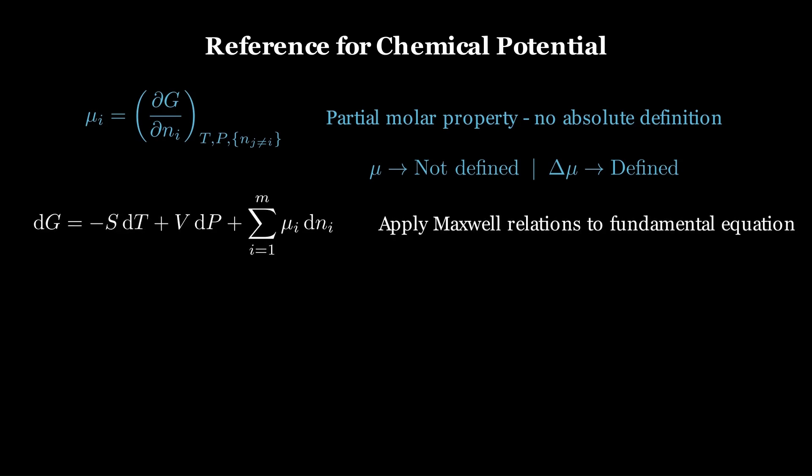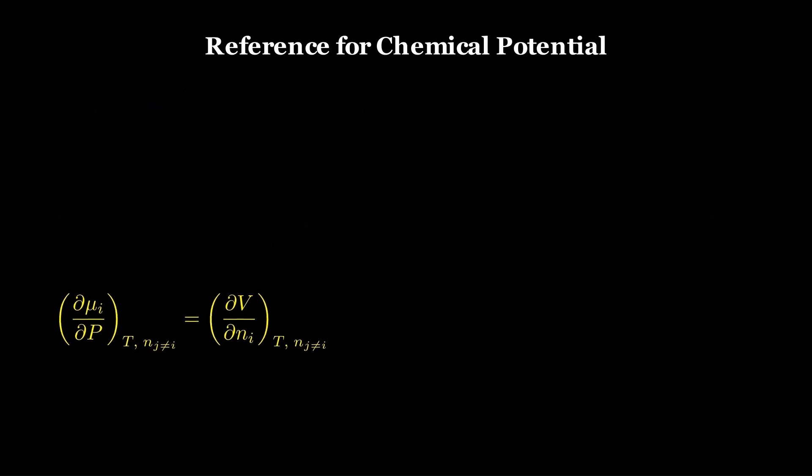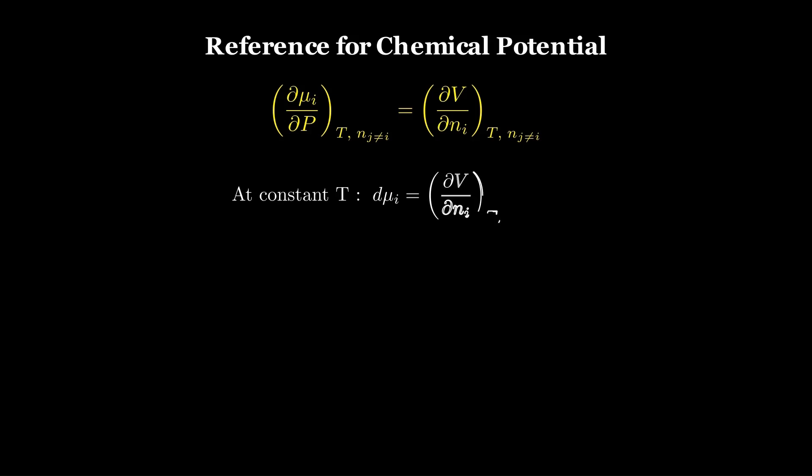To make those dependencies explicit, we begin with the fundamental differential equation for the Gibbs free energy, whose natural variables are T and P. Applying Maxwell relations separates the pressure and temperature responses of chemical potential. The first relation shows how it changes with pressure, while the second captures its temperature dependence. Focusing on pressure alone, we hold temperature constant so that the partial derivatives reduce to ordinary differentials. Substituting the definition of the partial molar volume for an ideal gas, we arrive at the familiar logarithmic expression for the pressure dependence of chemical potential.